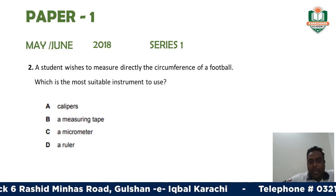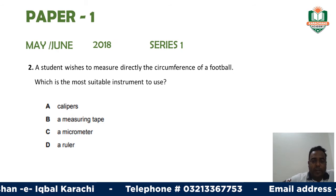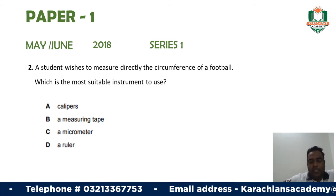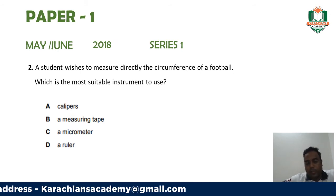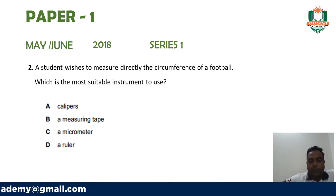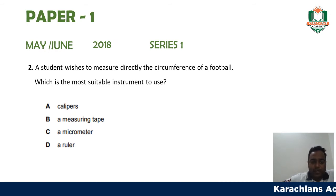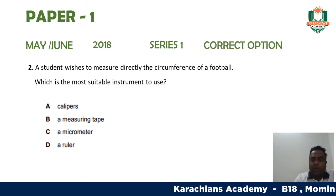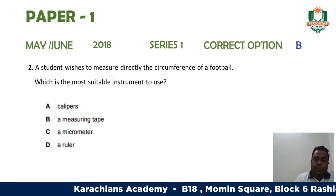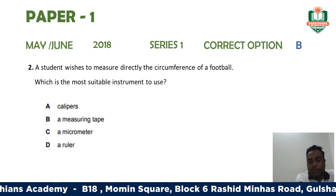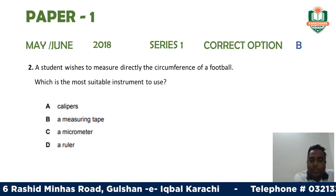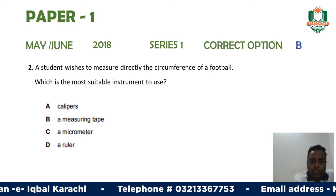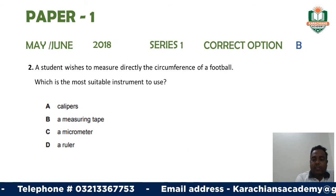A micrometer won't be able to measure the circumference of the football because the football's size is much larger than the micrometer's maximum range. A ruler also cannot measure any dimension of a circular object. So the more accurate answer is option B — measuring tape — because by rolling it around the football for one revolution, the length of the tape gives us the circumference.